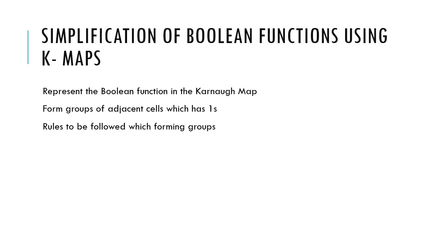In this particular class, we are going to look at the first step towards simplification of boolean functions using Karnaugh map. What we are going to do is represent the boolean function in the Karnaugh map, which we have already discussed, and then we are going to form groups of adjacent cells which contain ones.